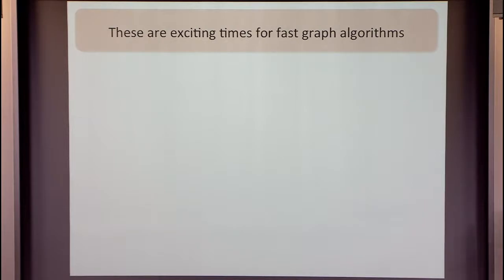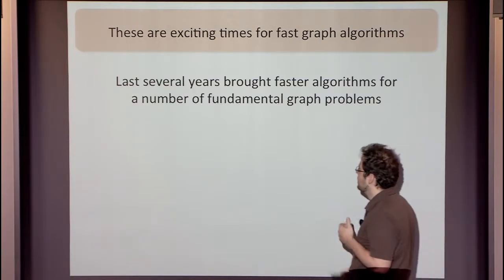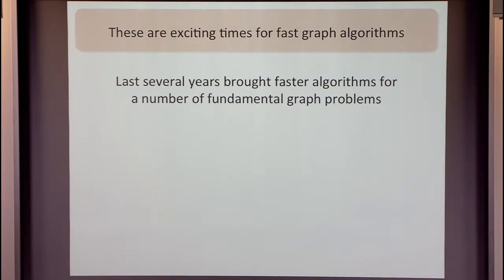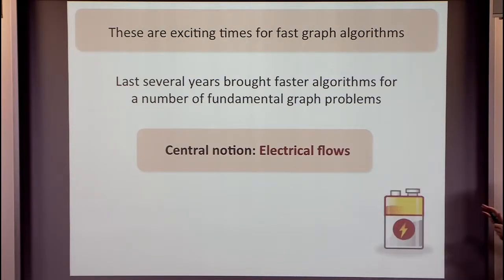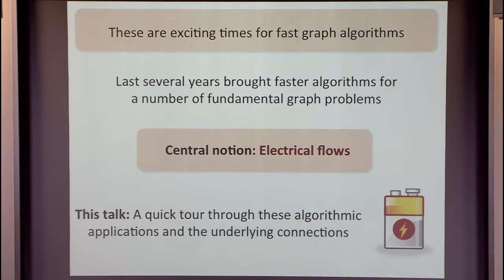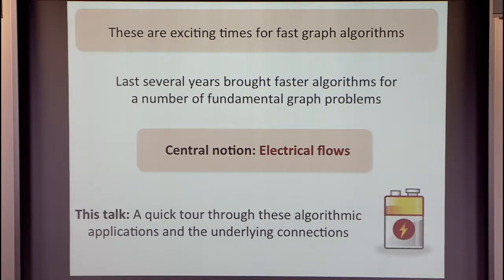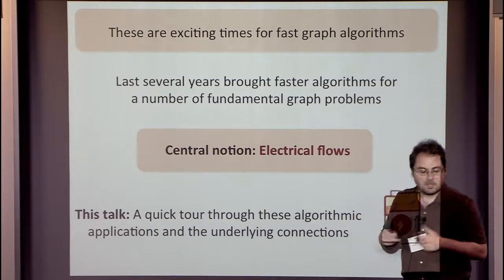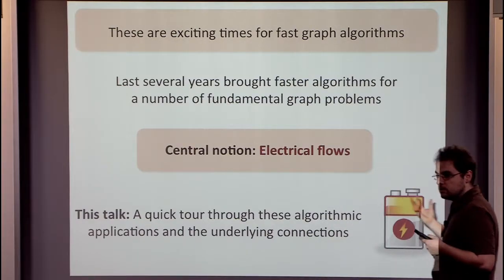Let me start with a very simple realization: if you look at what was happening in the field of fast graph algorithms for the last five or six years, it's pretty exciting. We've seen a lot of new algorithms that improve over long-standing bounds, and more importantly, they do it in a very different way than we used to approach these problems. One central notion in most, if not all, of these developments is the notion of energy graph flows. I want to give you a quick tour through these algorithmic applications and highlight the underlying connections.